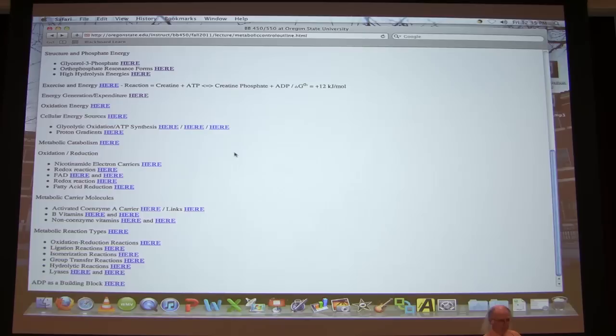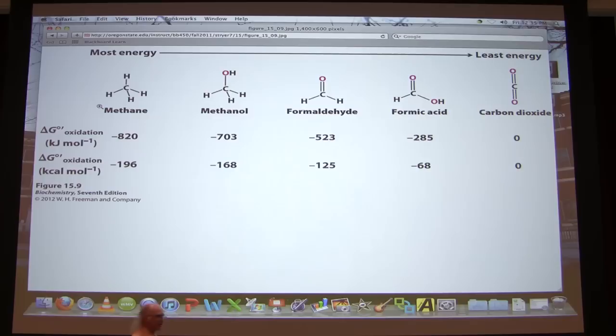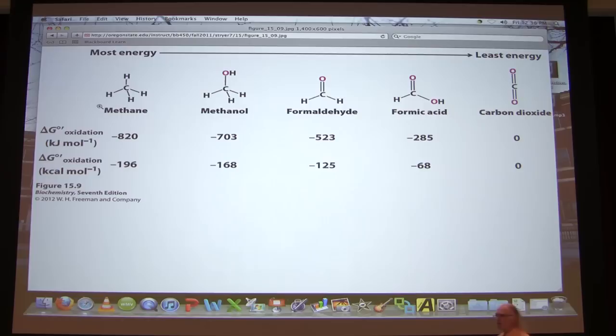Oxidation means the loss of electrons. Electrons don't just disappear — in chemical reactions, we can't create or destroy matter. Those electrons have to go somewhere. Cells have very cool ways of handling those electrons, and the handling of those electrons is critical for making ATP. If I go from methane to methanol, I've gone through an oxidation. Oxidation doesn't equate with oxygen — it simply means the loss of electrons.